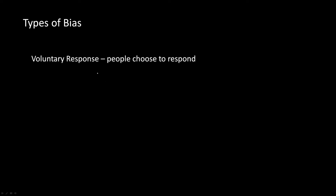The first type of bias is going to be voluntary response bias. This is where only people who choose to respond are the ones responding to the survey. This is bad because it often tracks only people who have stronger opinions, because they want to voice their opinion, so they're the ones who tend to respond to these surveys.